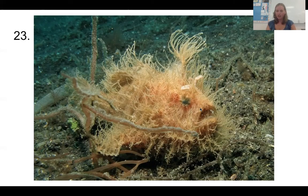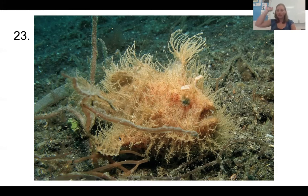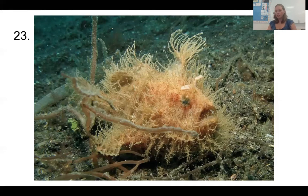This is called the hairy frog fish — it is an animal. These are not actual hairs; they're extensions of the scales on their bodies. There's the eye, there's the mouth, here's a fin, here's a fin. They have a modified dorsal fin on their back that they use like an angler, like you saw in Finding Nemo — they have this little dangly thing they can wave around to encourage fish to come check it out thinking they're going to get a meal, and once they get close enough within one body length, they can swoop in and catch that fish very easily.